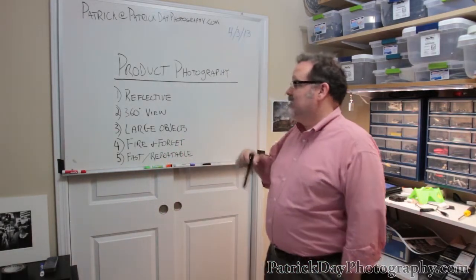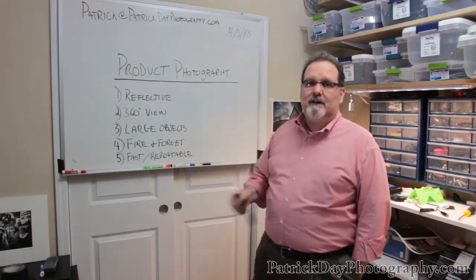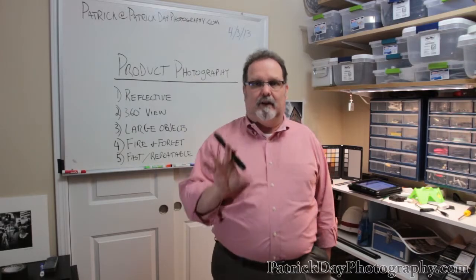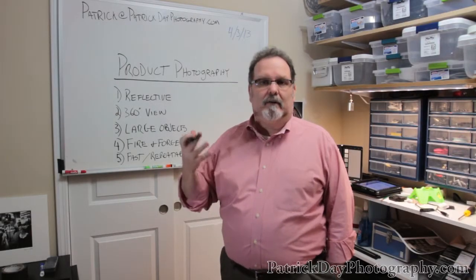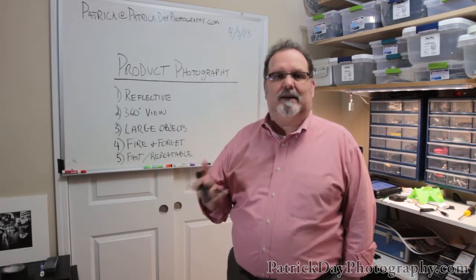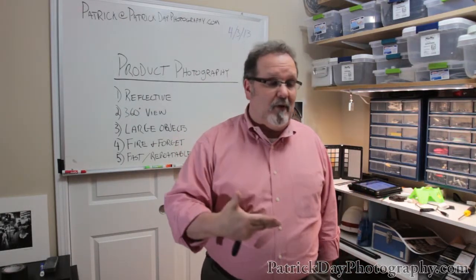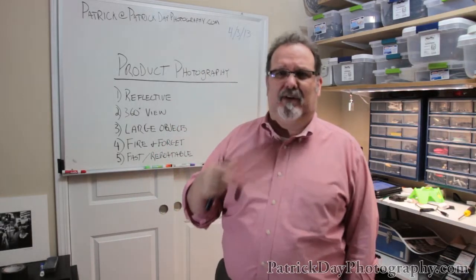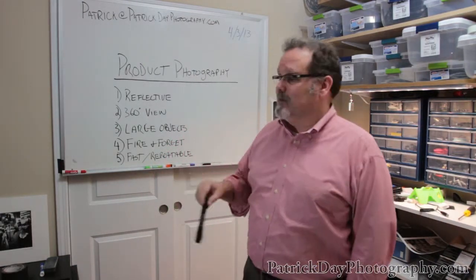What I've done is defined my requirements for developing this table. First, I want a reflective base. You've seen the standard product-on-white photography — a basic object on a white matte base creates a nice shadow, it's pretty, but I want to take it to the next level. One way is Photoshop — copying, pasting, and shadowing it out — but that's a lot of work. I'd rather do it in camera and minimize my time in post.